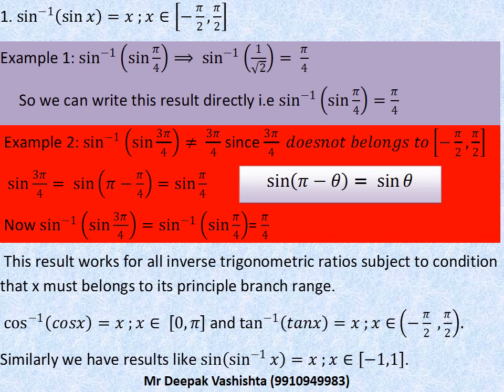Now we have some important properties of inverse trigonometric functions. You can see the first property: sin inverse sin x equals x, when x belongs to minus pi by 2 to pi by 2. This condition is very important — only if x belongs in this interval can we say sin inverse of sin x equals x.